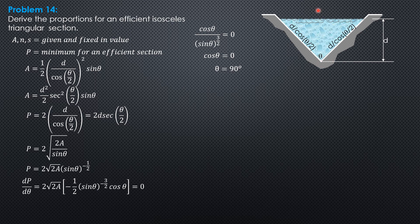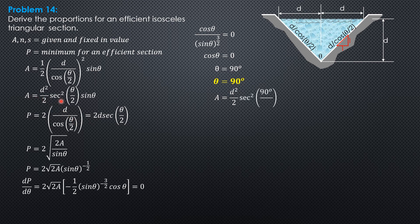Since theta is 90 degrees, half of that is 45 degrees, so the slope of the slanted side is 1:1. The depth and horizontal distance are both d. The area is one-half of 2d times d, which equals d². Verifying with the formula: d²/2 · sec²(45°) · sin(90°) = d²/2 · 2 · 1 = d². So area = d².